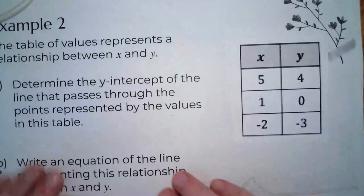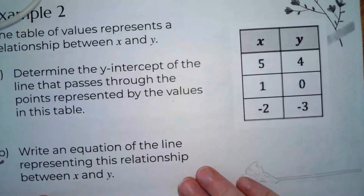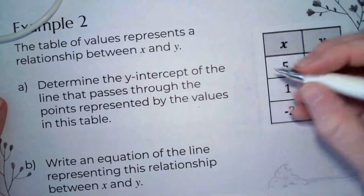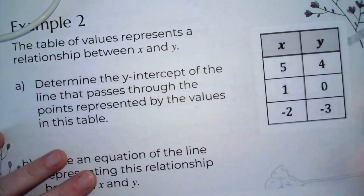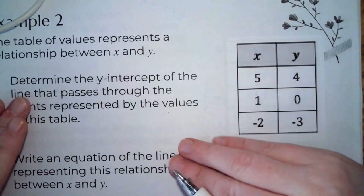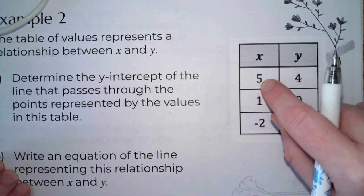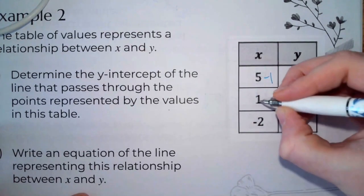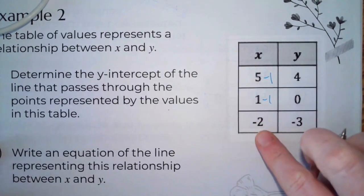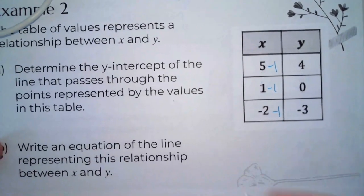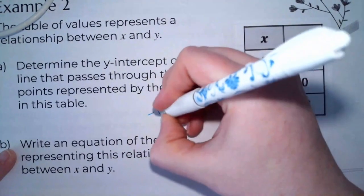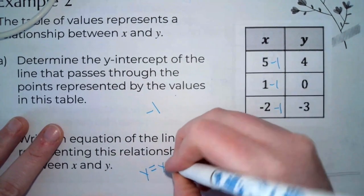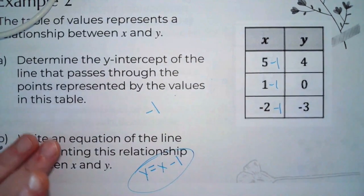Number 2: you'll notice that your x is bigger than your y. Even though it's called additive, remember subtracting is the same thing as adding a negative. What am I doing to 5 to get to 4? Subtract 1. One minus 1 is 0, negative 2 minus 1 is negative 3. So my y-intercept is negative 1, and the equation is y equals x minus 1.